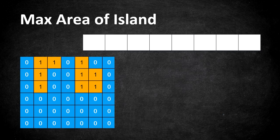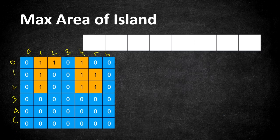BFS always needs the help of a queue. We perform one BFS iteration to find the area of one island, and this is repeated for all islands in the binary matrix, finally returning the maximum area. Our main method iterates the binary matrix starting from index 0,0, and whenever it encounters a 1, it calls BFS to calculate the area. Starting at 0,0 it is 0, so we move to 0,1 which has a 1.